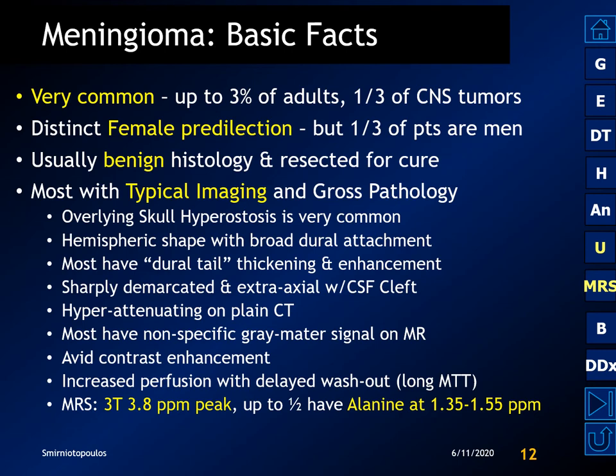Some basic facts about meningiomas: they are very common — in fact, 0.3% to 3% of normal adult humans will have meningiomas. There's a distinct female predilection, but one-third of the patients are going to be men. They're usually benign and can be resected for cure. Most commonly they have the typical imaging appearance and typical findings on gross pathology. Hyperostosis is common, and the hemispheric shape with broad dural attachment is typical. Most of them have a dural tail.